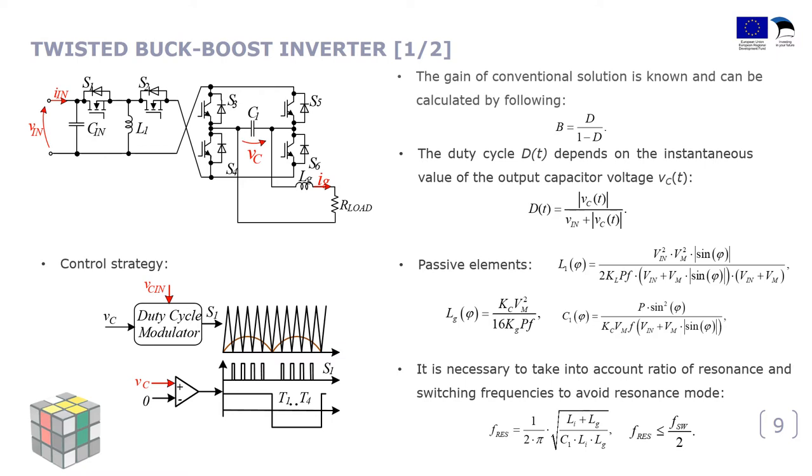The first considered topology was the twisted buck-boost inverter based on unfolding circuit. It is not difficult to express the values of the passive components depends on the predefined ripples, because the equivalent circuit allows to apply the steady-state analysis. The expression of the passive components you can see on the right side. The topology has the LCL filter, so it needs to remember and check the ratio between the resonance and switching frequency for stable case.